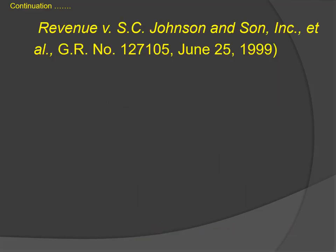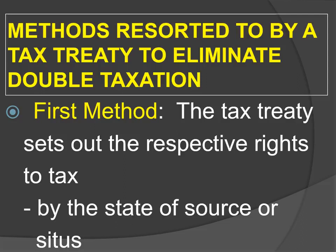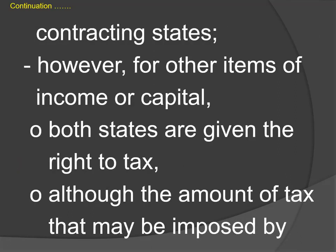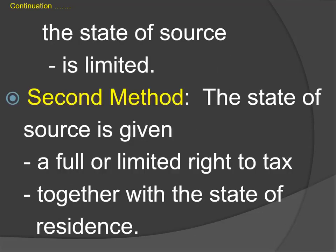The 1999 case of S.E. Johnson has provided for us the two methods resorted to by tax treaty to eliminate double taxation. Under the first method, the tax treaty sets out the respective rights to tax by the state of source or situs and by the state of residence with regard to certain classes of income or capital. In some cases, an exclusive right of tax is conferred on one of the contracting states. However, for other items of income or capital, both states are given the right to tax, although the amount of tax that may be imposed by the state of source is limited.